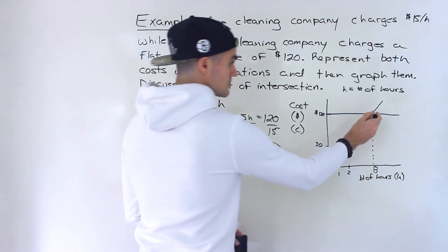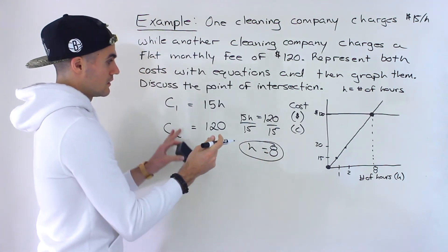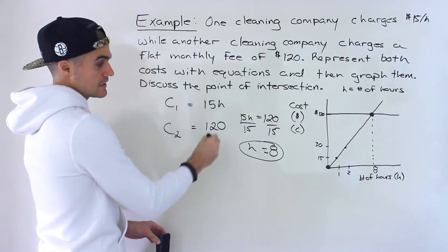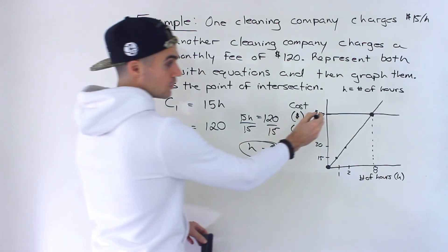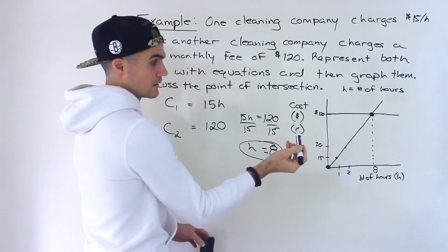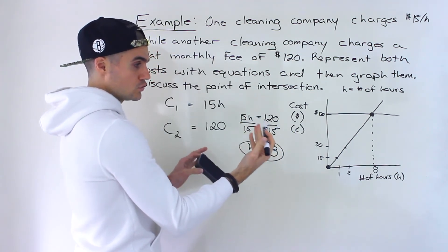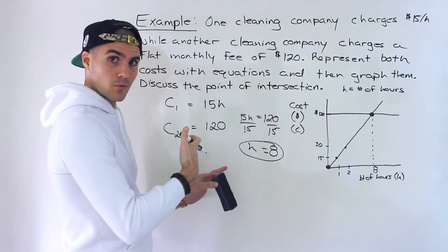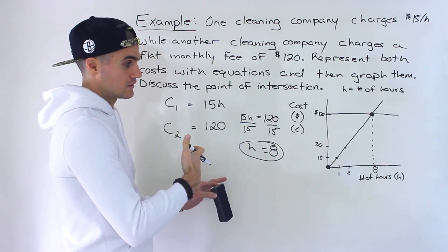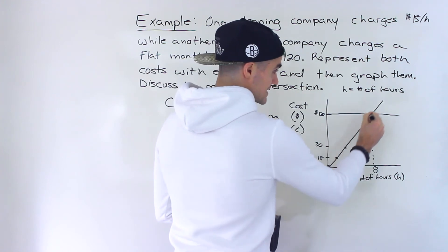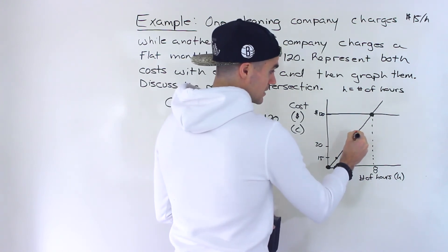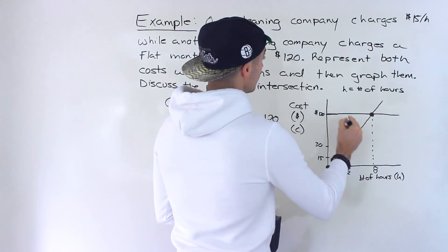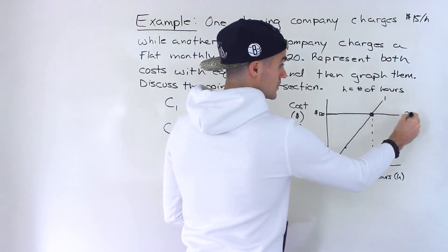So what it means is that at this point, if you get eight hours of cleaning done, then both costs are going to equal, they're both going to equal 120 then. Now, if you are going to get less than eight hours of cleaning done, then the first company is going to be cheaper. This is company one, this company two. The first company is going to be cheaper than the second company.